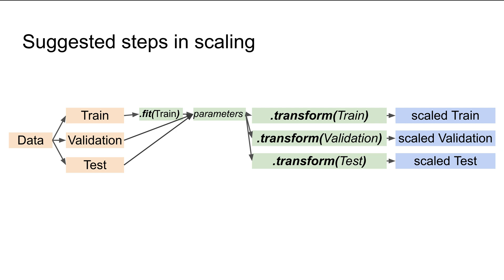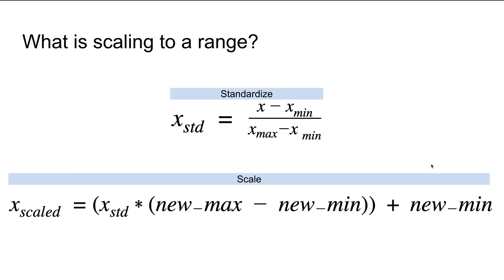Before we get into the actual scaling, I want to emphasize that in most cases you usually want to have your data split into train, validation, and test sets. You then want to fit the scaling methods only on the train dataset to get the parameters, and then use those parameters to transform all three sets — train, validation, and test — to get the final scaled versions.